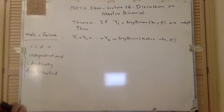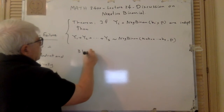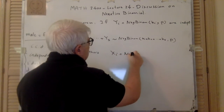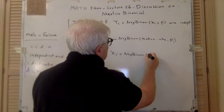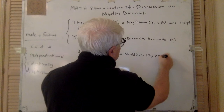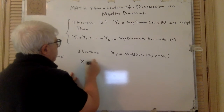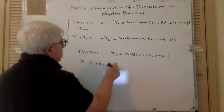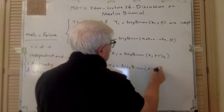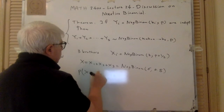Okay, so in our situation, we have the three brothers. Each one of them — Xi — was a negative binomial with two successes and probability p equals one-half. So X, which is X1 plus X2 plus X3, will be a negative binomial with parameters 6 and 0.5.